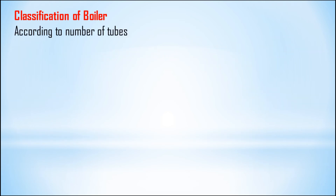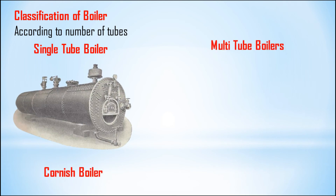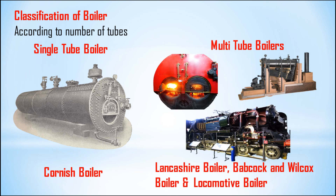The next classification is according to the number of tubes — we can classify boilers as single tube boilers and multi-tube boilers. In the Cornish boiler, only one tube is present, so it is called a single tube boiler. In multi-tube boilers, more than one tube is used. Examples of multi-tube boilers are the Lancashire boiler, Babcock and Wilcox boiler, and locomotive boiler.